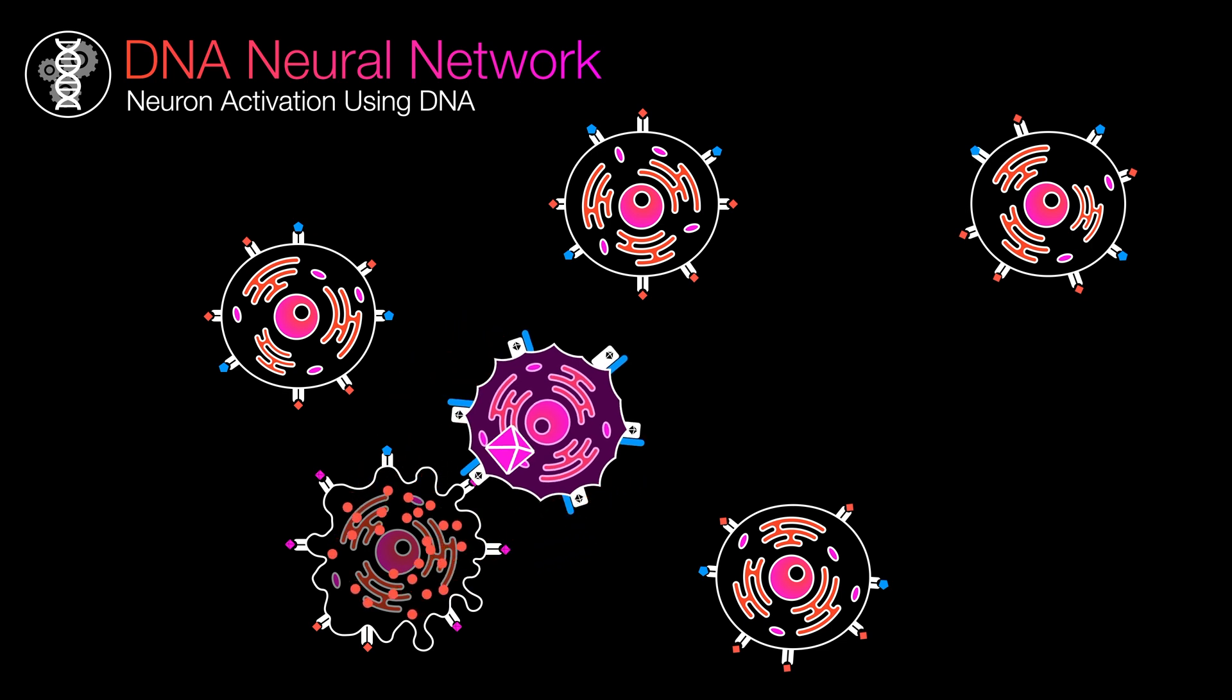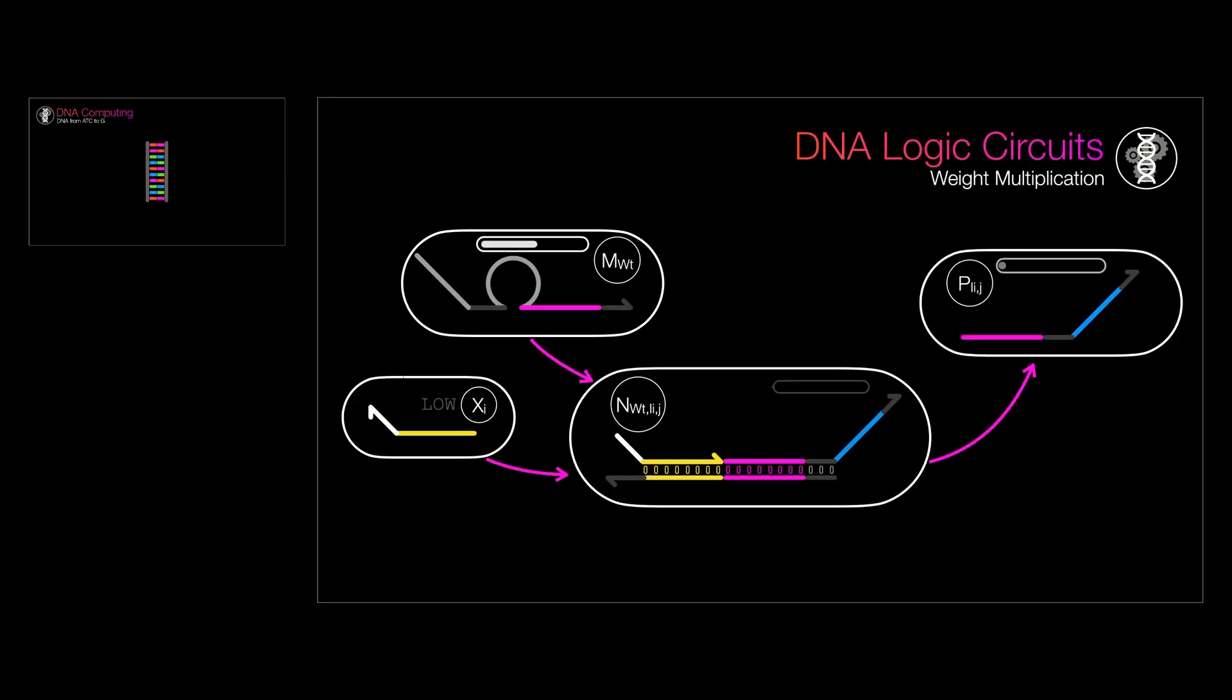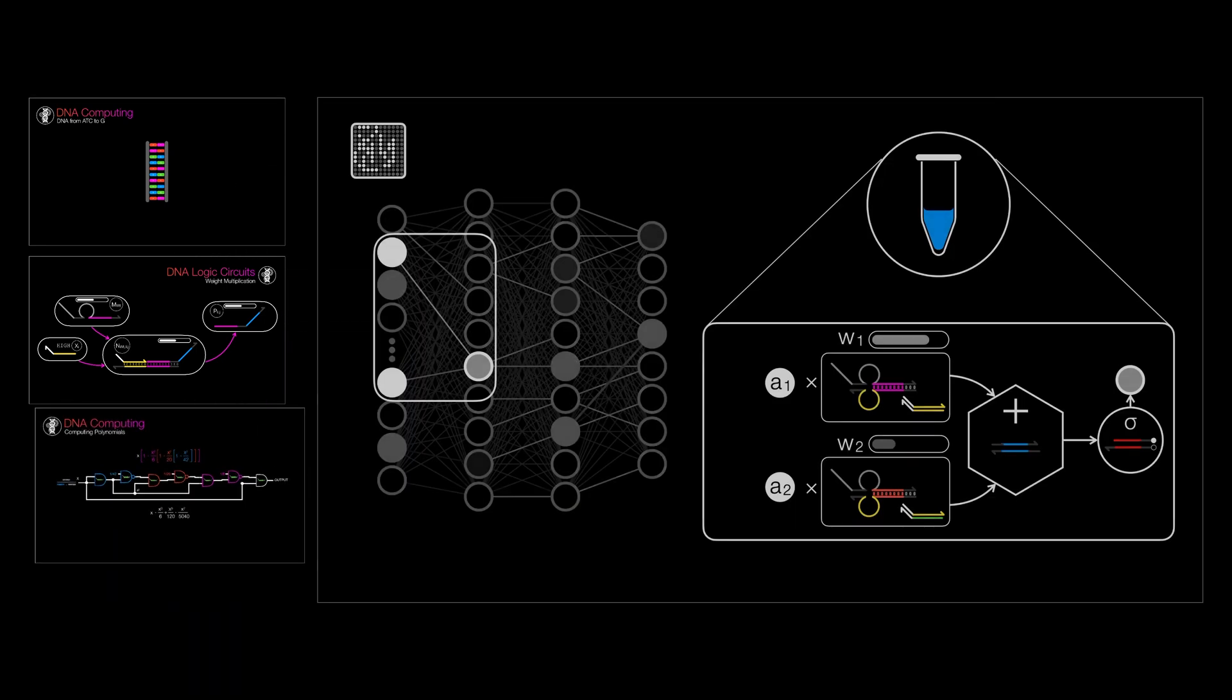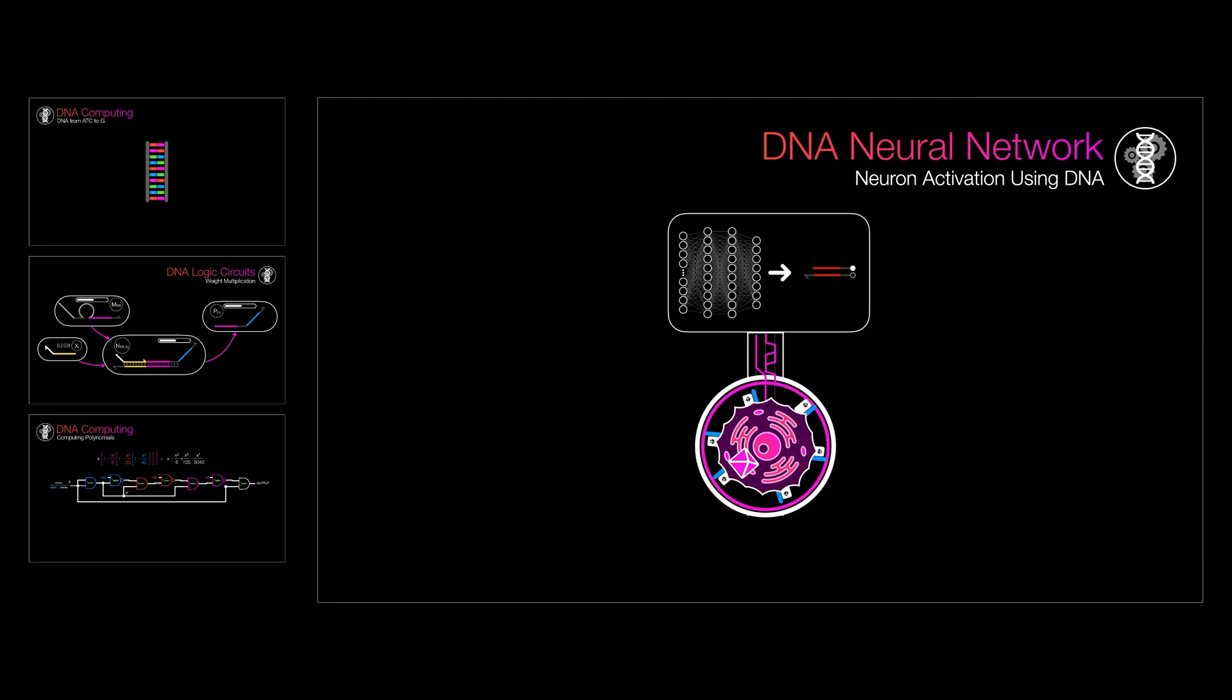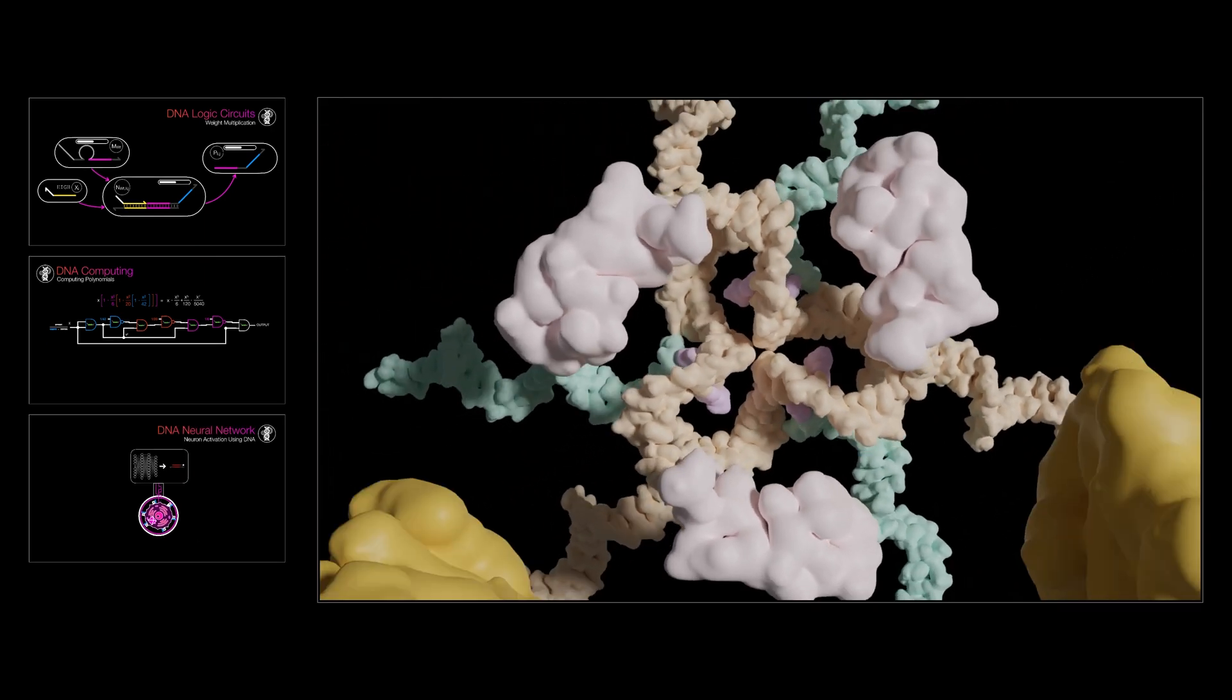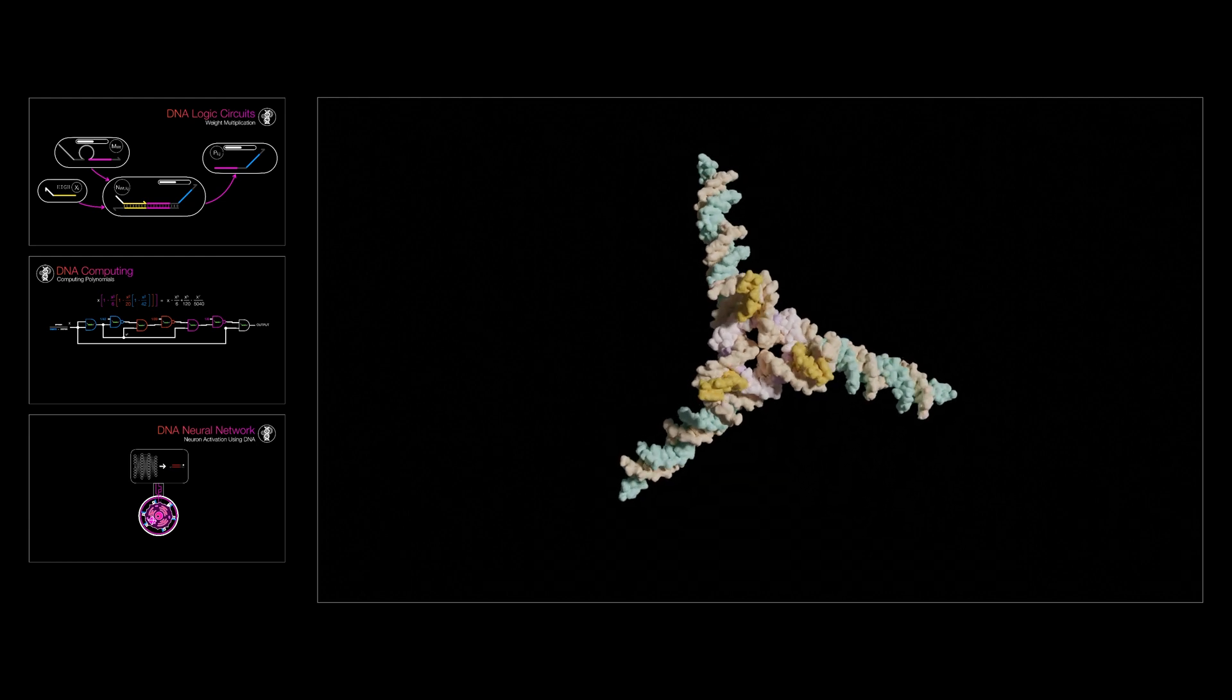Don't worry, this course is specifically made for computer scientists. So we'll start all the way from the most basic ATCGs you've learned about in high school, to DNA logic gates, computing polynomials, connecting DNA computers to living cells and nanobots, and even a whole new paradigm of computation that involves using the three dimensional properties and topology of DNA. So without further ado, let's get started.